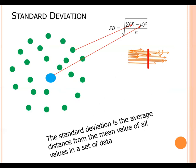And finally, we found that the standard deviation is the average distance from the mean value of all values in a data set.